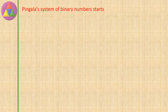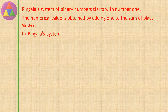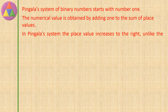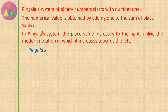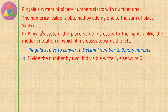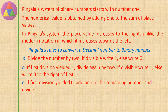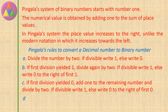Pingala's system of binary numbers starts with number 1. The numerical value is obtained by adding 1 to the sum of place values. In Pingala's system, the place value increases to the right, unlike the modern notation in which it increases towards the left. Pingala's rules to convert a decimal number to binary: A) Divide the number by 2 — if divisible write 1, else write 0. B) If the first division yielded 1, divide again by 2 — if divisible write 1, else write 0 to the right of the first 1. C) If the first division yielded 0, add 1 to the remaining number and divide by 2 — if divisible write 1, else write 0 to the right of the first 0. D) Continue this procedure until you get 1 as the remaining number.